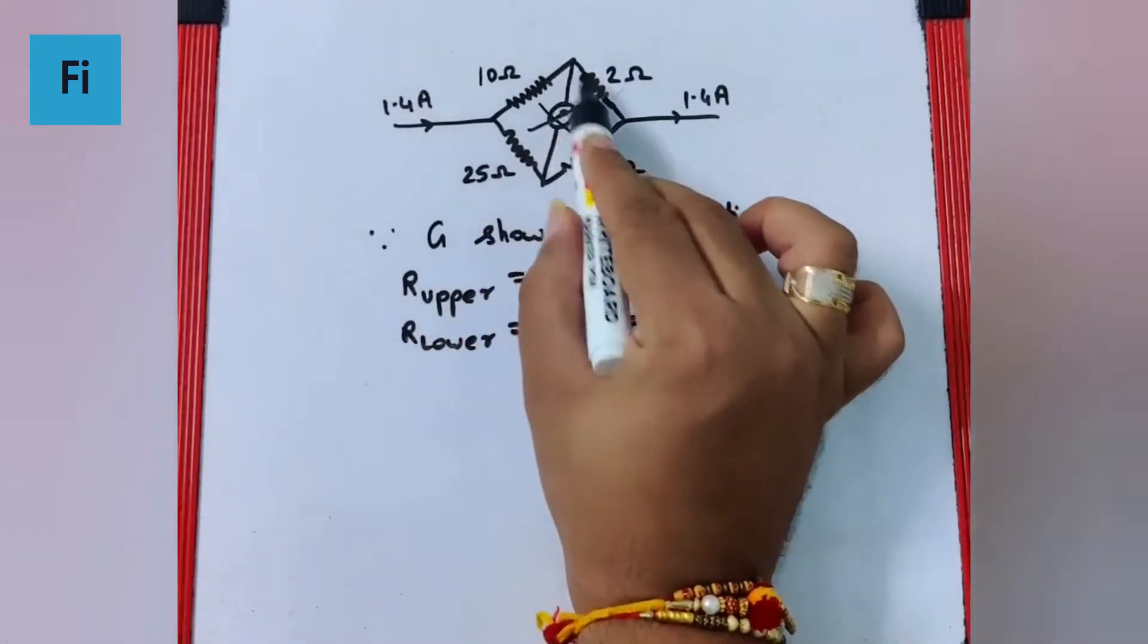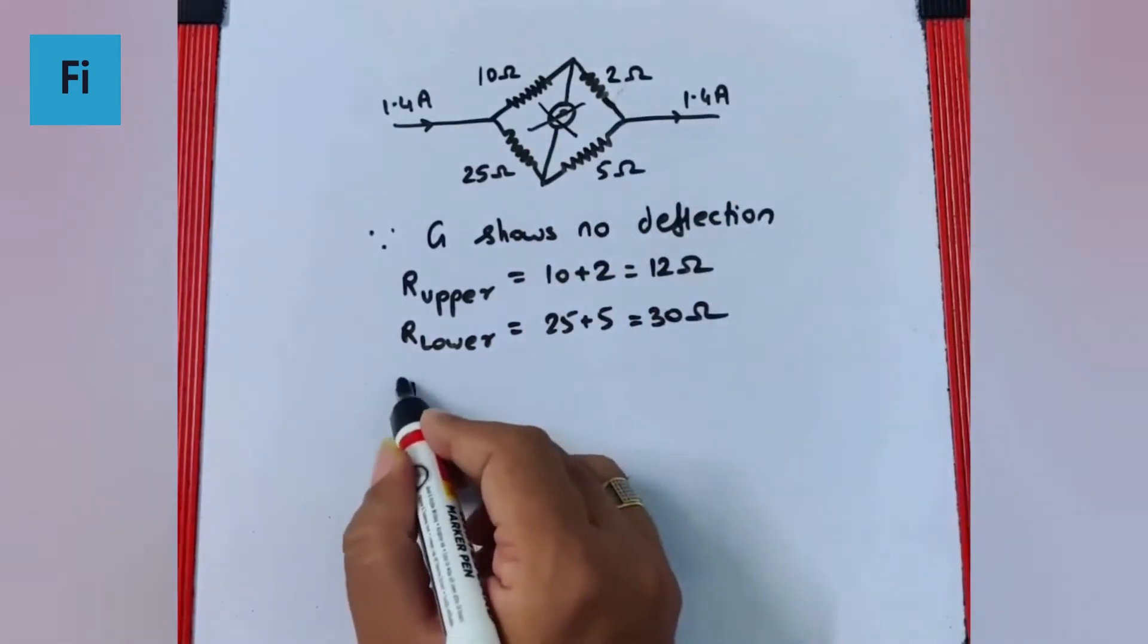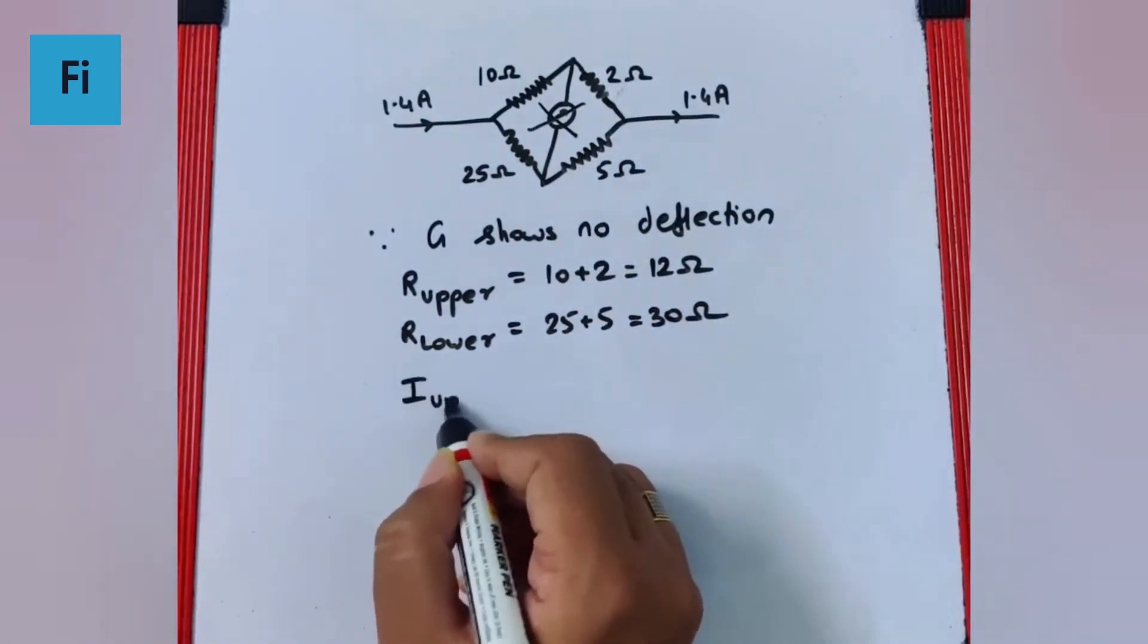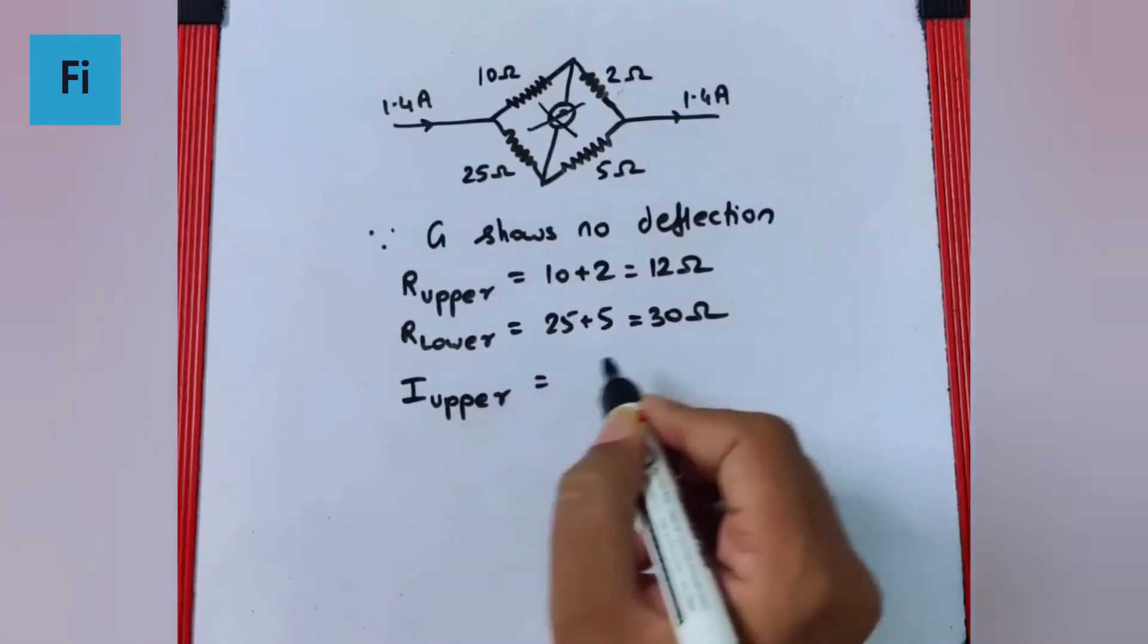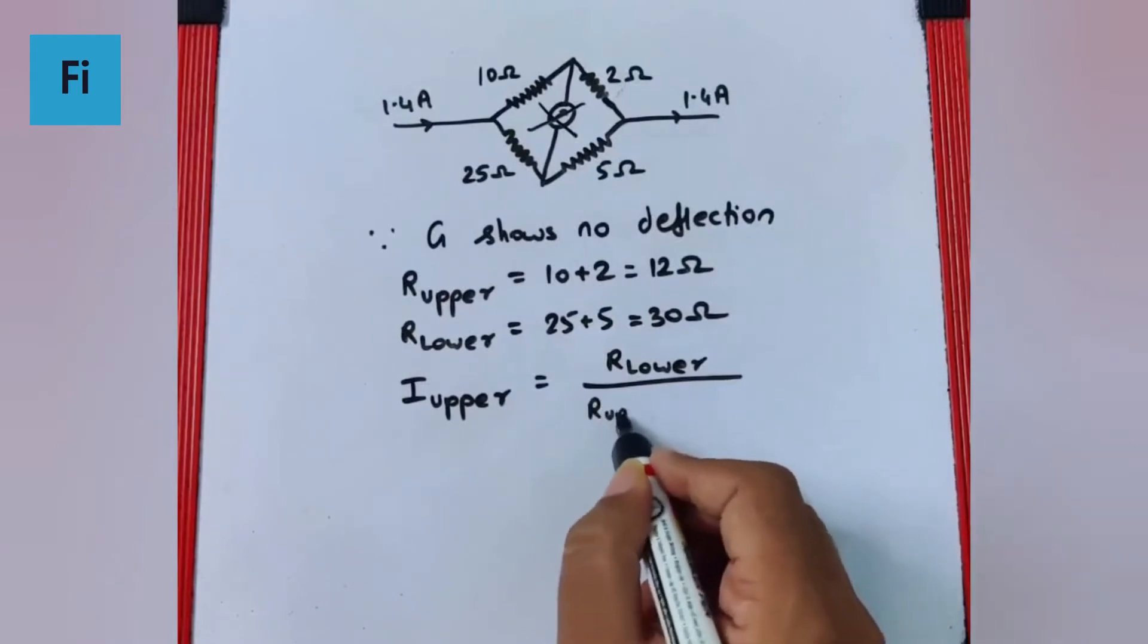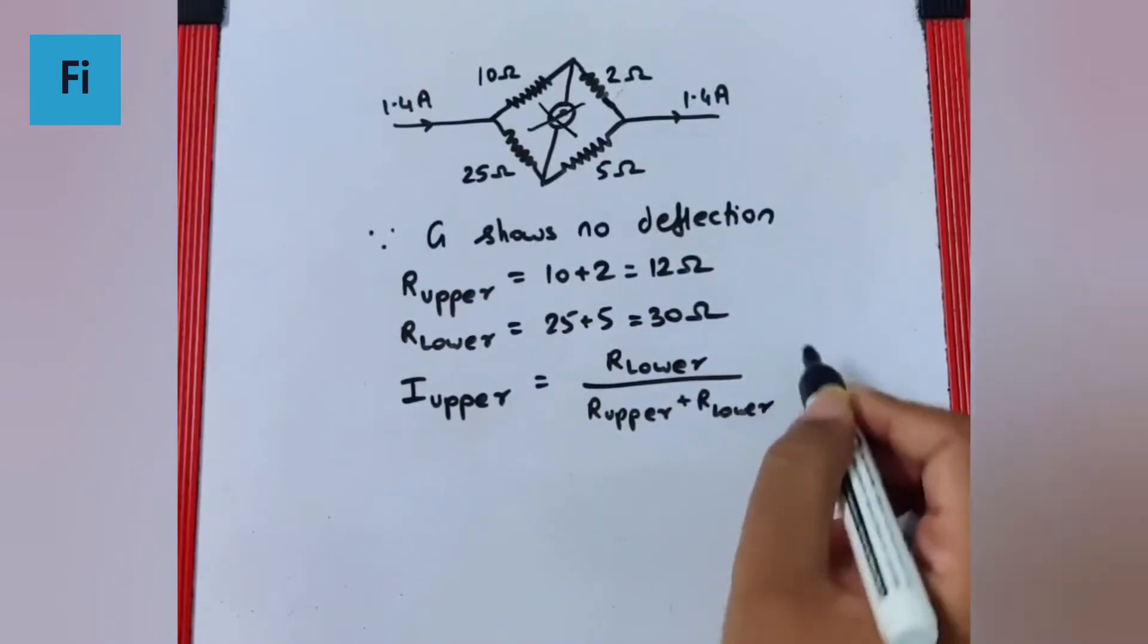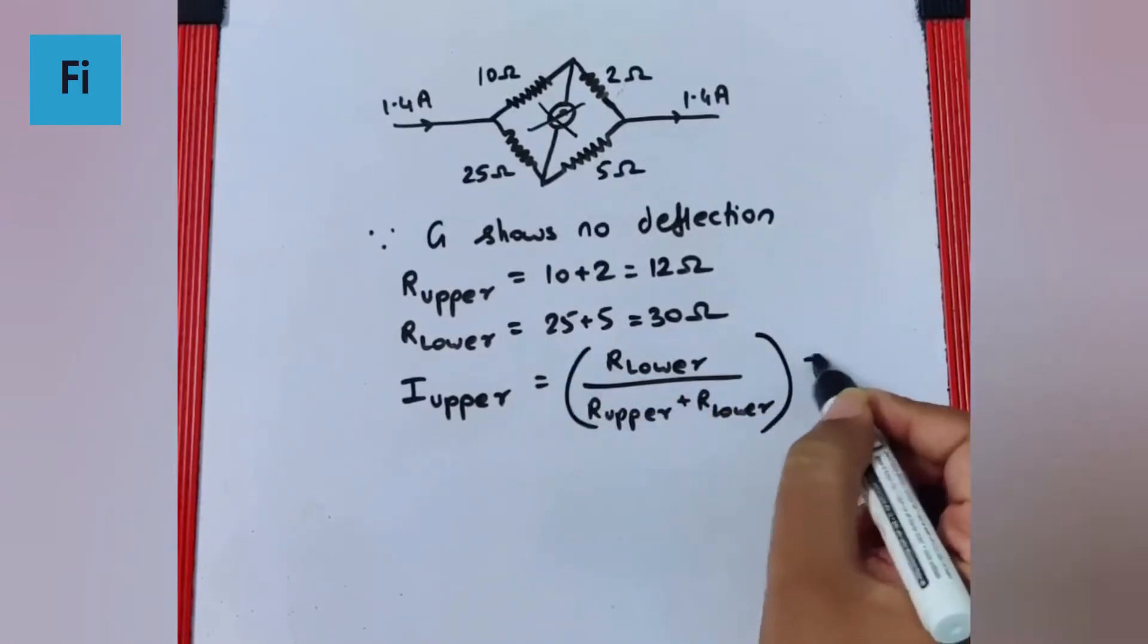Now the current through 10 and 2 is going to be the same. So we can use current divider rule, as I upper is going to be R lower upon R upper plus R lower, the whole into the total current.